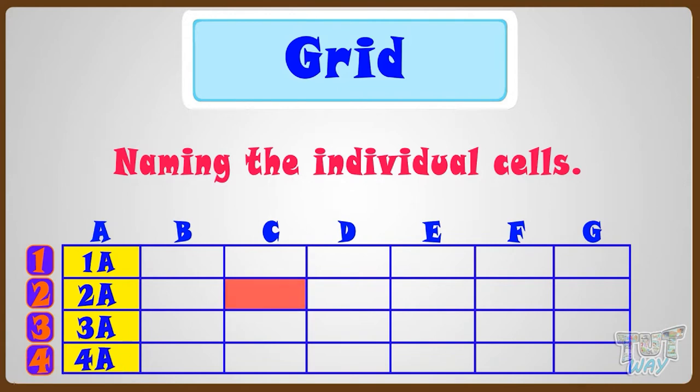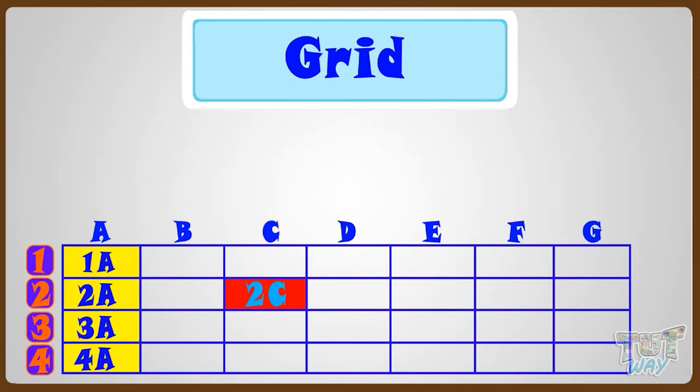Now let's name this cell, which is shown red in color. Its row name is 2 and its column name is C. So it can be named as 2C. Similarly, we can name any cell using its row name and column name.